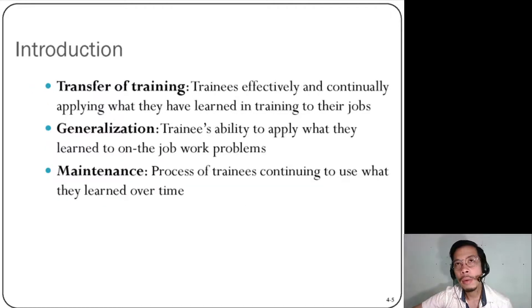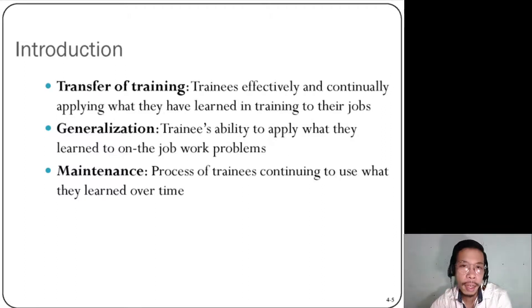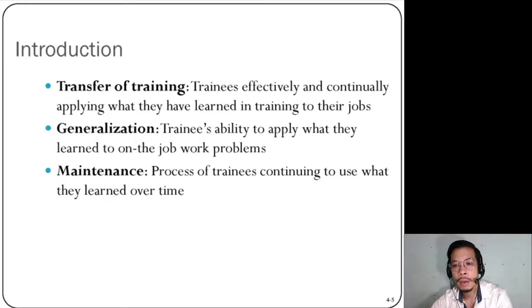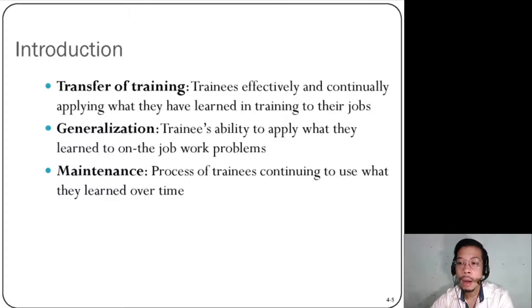Before we continue, we should enumerate and describe the terms used in this lecture series. Transfer of training is when trainees effectively and continually apply what they have learned in training to their jobs. We can say that effective training equals transfer of training — if the trainee was able to utilize what he or she has learned during the training in their current work.